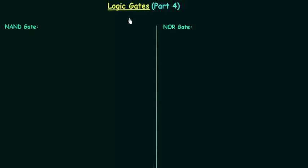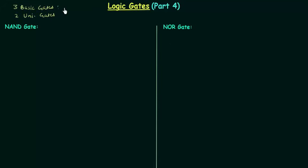Welcome to the 4th part of logic gates. In this part we will complete NAND gate and NOR gate. If you remember the first part, I told you we have 3 basic gates and we have 2 universal gates. The 3 basic gates are AND, OR, and NOT, and the 2 universal gates are NAND and NOR. This is something we have already covered in the first lecture.